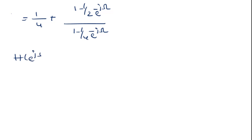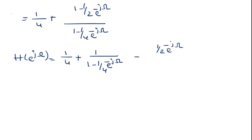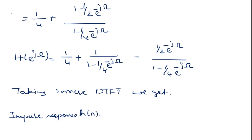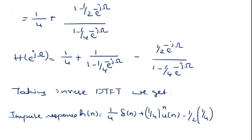Then H(e^(jΩ)) = 1/4 + 1/(1 − (1/4)e^(−jΩ)) − [(1/2)e^(−jΩ)] / [1 − (1/4)e^(−jΩ)]. Taking the inverse DTFT, we get the impulse response h(n) = (1/4)δ(n) + (1/4)^n u(n) − (1/2)(1/4)^(n−1) u(n−1). Thank you.